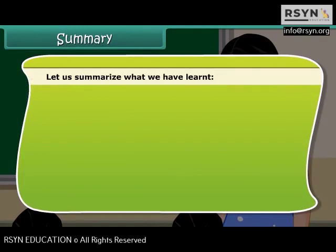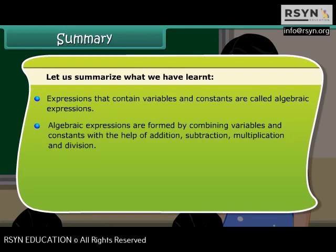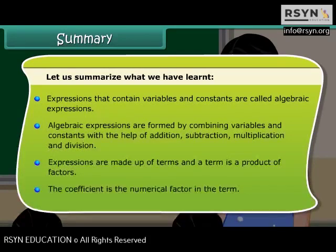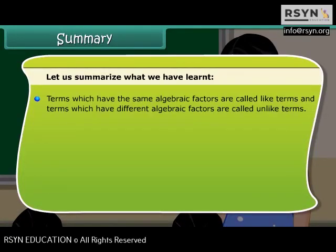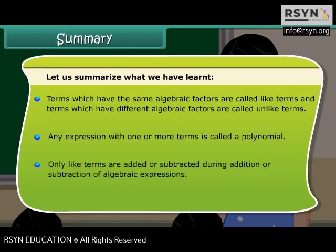Let us summarize what we have learned. Expressions that contain variables and constants are called algebraic expressions, formed by combining variables and constants using addition, subtraction, multiplication, and division. Expressions are made up of terms, and a term is a product of factors. The coefficient is the numerical factor in a term. Terms with the same algebraic factors are like terms; those with different factors are unlike terms. Any expression with one or more terms is called a polynomial. Only like terms are added or subtracted during addition or subtraction of algebraic expressions.